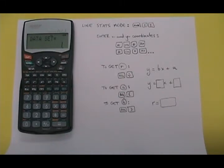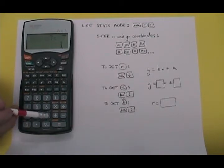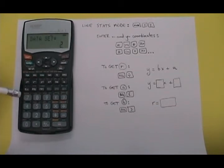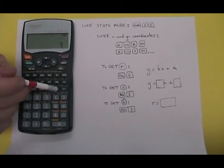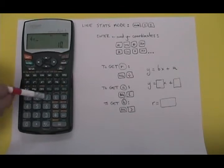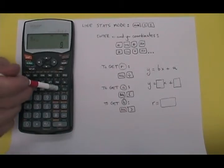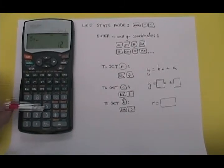I'm going to enter the other coordinates. I have 3 more. So I'm going to enter the point 3 STO 9 M plus. Now the point 4 STO 10 M plus. And finally the point 5 STO 12 M plus.